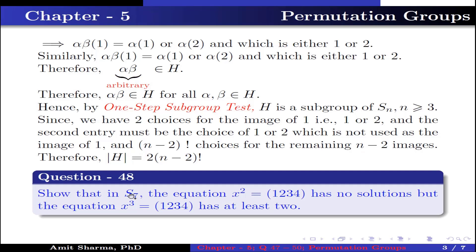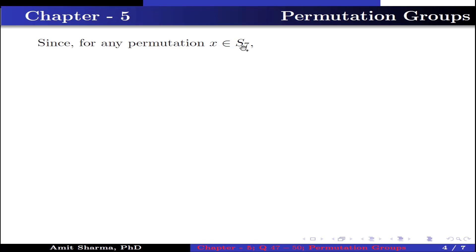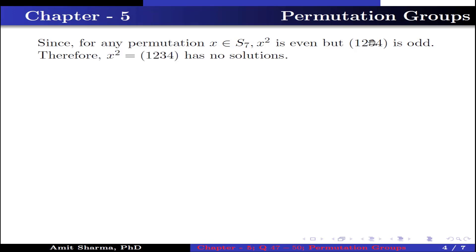Question number 48: Show that in S_7, the equation x² = (1 2 3 4) has no solution, but the equation x³ = (1 2 3 4) has at least two solutions. The given group is S_7. Since for any permutation x in S_7, x² is always even — because the product of two odd permutations is even, and the product of two even permutations is also even. But the permutation (1 2 3 4) is odd because it is an even-length cycle. Therefore x² = (1 2 3 4) has no solution.